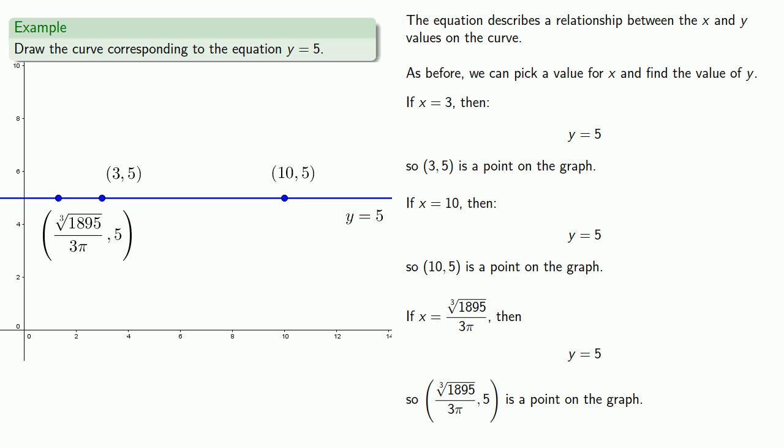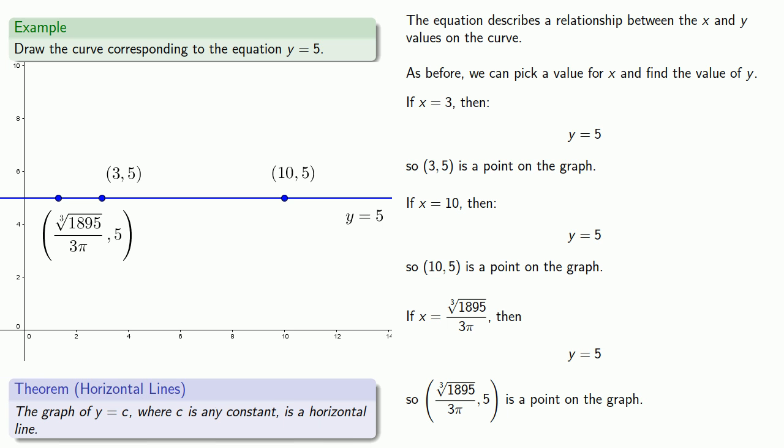Now, let's pause a moment and think about this process. If we had y equals any other number, we'd still have the same value of y regardless of the x value, and so we'd still get a graph that looks very much like this. And this leads to the following theorem: The graph of y equals c, where c is any constant, is a horizontal line.